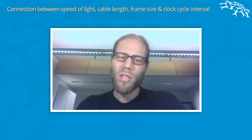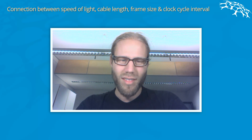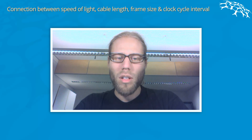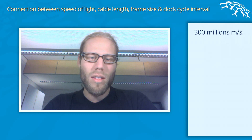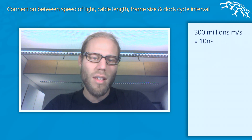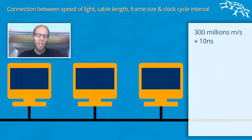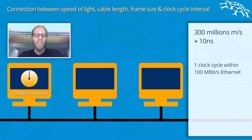Since transferring a bit over the cable means that you put an electromagnetic wave on the cable, the data spreads at the speed of light. The speed of light is approximately 300 million meters per second. Multiplying this by 10 nanoseconds, you can see that on a 100 megabit Ethernet device, within one clock cycle, the signal would have traveled something like three meters.